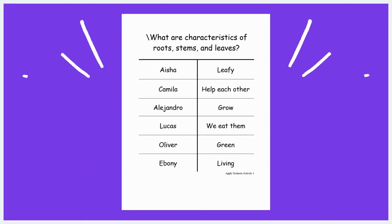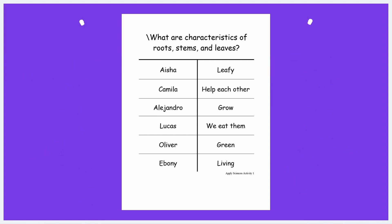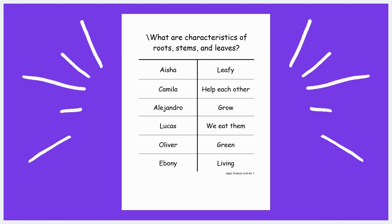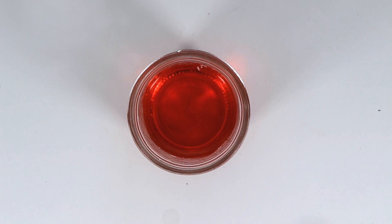Start the activity by using the documentation panel from activity one to see if children can add more characteristics to the panel. You will then build upon children's knowledge of roots, stems, and leaves by having them observe a real stem. Ask children what do stems do for plants, and fill out the prediction panel with their answers.